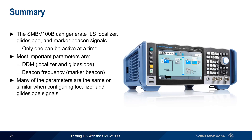Remember that many of the parameters used in localizer and glide slope configuration are often the same or very similar in meaning and function. This concludes our presentation, Testing ILS with the SMBV100B. If you'd like to learn more about avionics, navigational aids, or generating and analyzing avionics signals, please see the links in the video description. Thanks for watching.